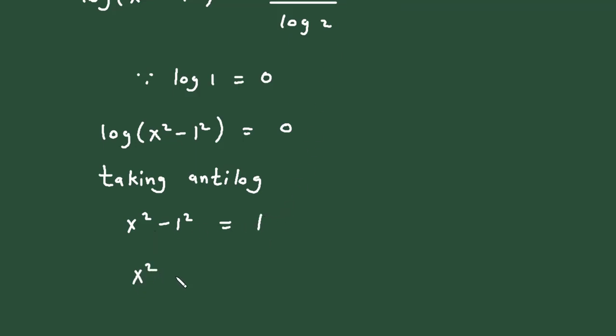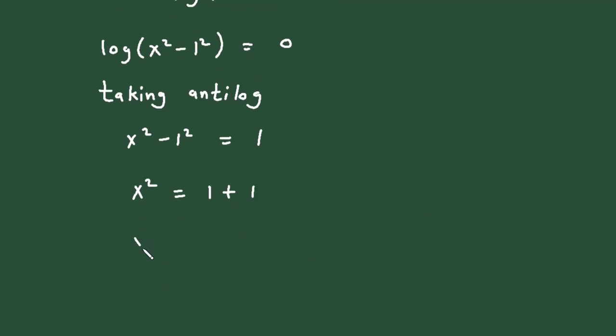Now x square is equal to, we can take this on right side. 1 square will be 1, so this 1 and this term will be plus 1. Therefore x² is equal to 2. So therefore x is equal to under root of 2.